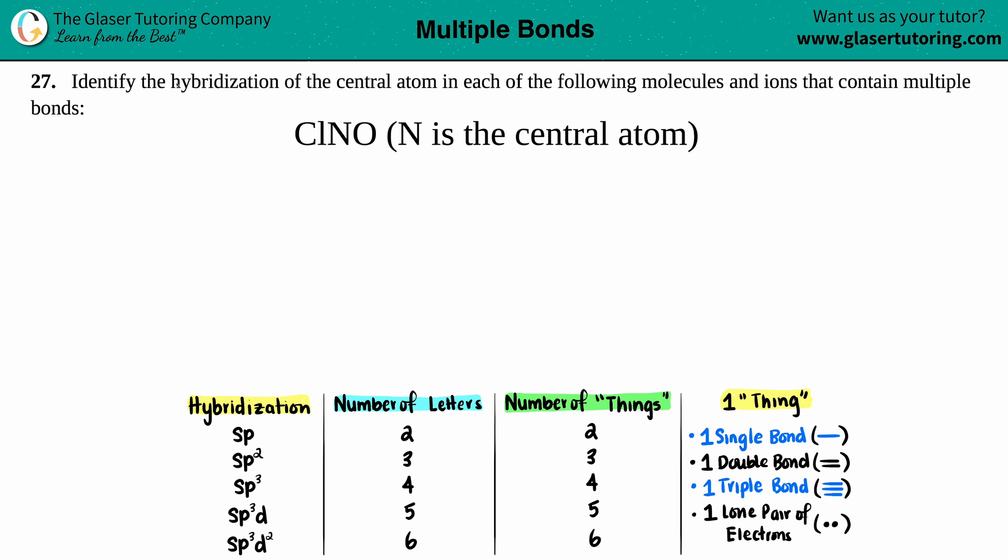Number 27: Identify the hybridization of the central atom in each of the following molecules and ions that contain multiple bonds. We have ClNO and they give us a hint - the nitrogen is the central atom.